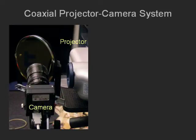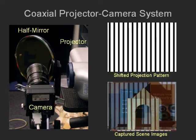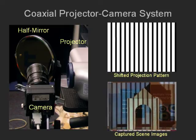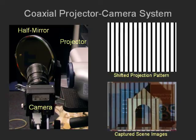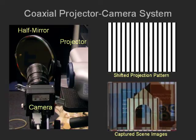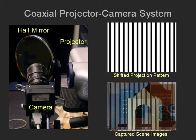Here we see the projector and camera used in our system. To avoid missing parts in scene recovery, we have made the projector and camera coaxial using a half mirror. Our method starts by capturing images while projecting shifted versions of a single periodic pattern, such as the stripe pattern shown here. A total of 24 shifts are used in our implementation. The projection defocus is then estimated for each of the scene points, independent of its texture, ambient illumination, and neighboring pixels, using only its intensity variation over time.